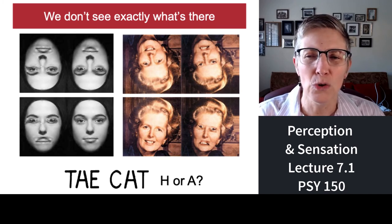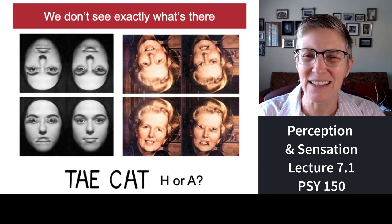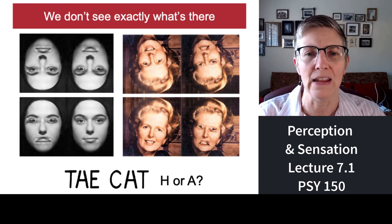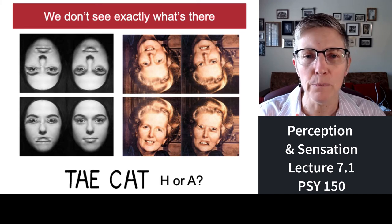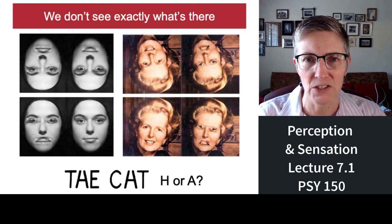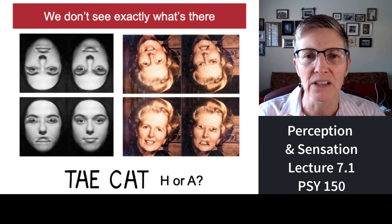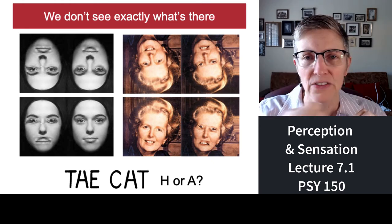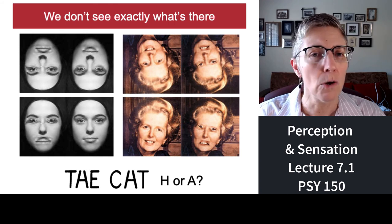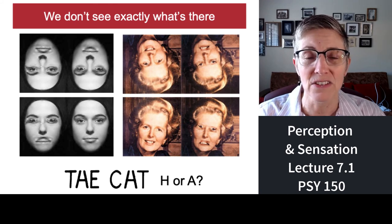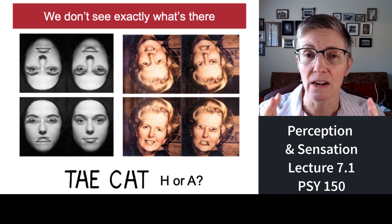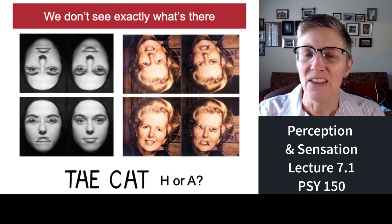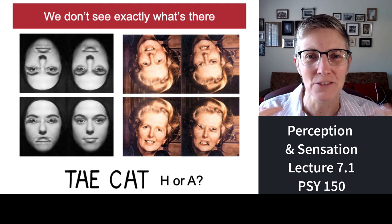Now that you know, you can see there's something a little funny, but you can't see them as really strange. Why is that? Because how we perceive things depends on all sorts of things — one of them being context and one of them being experience. You have a lifetime of experiences with faces in the upright position, and almost no experience with faces that are upside down. So your visual system has developed a lot of expertise with upright faces and no expertise with upside-down faces.